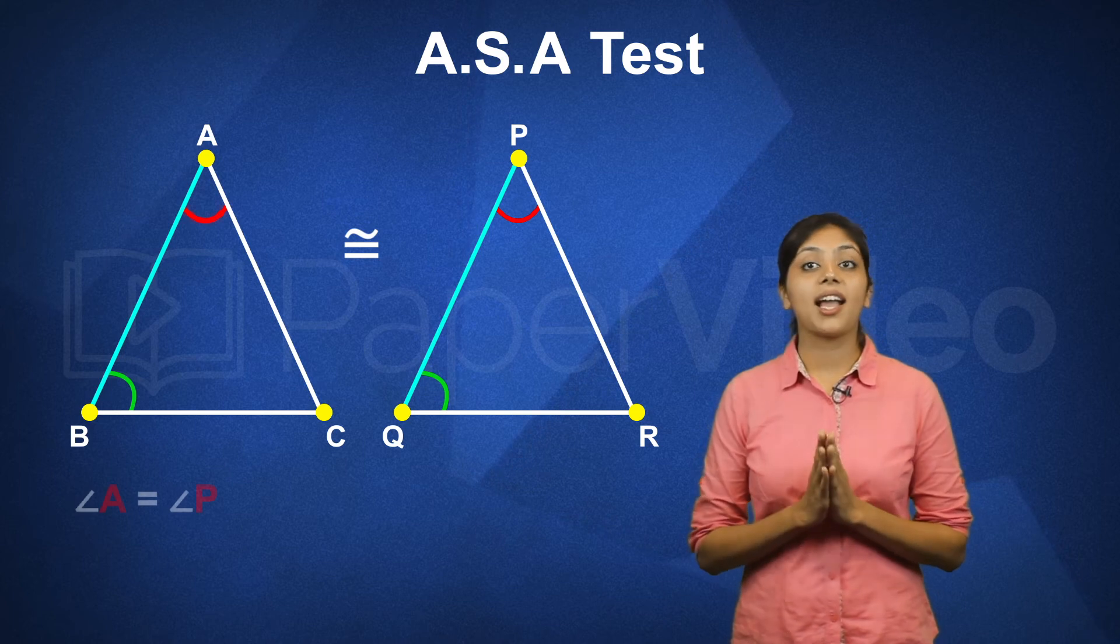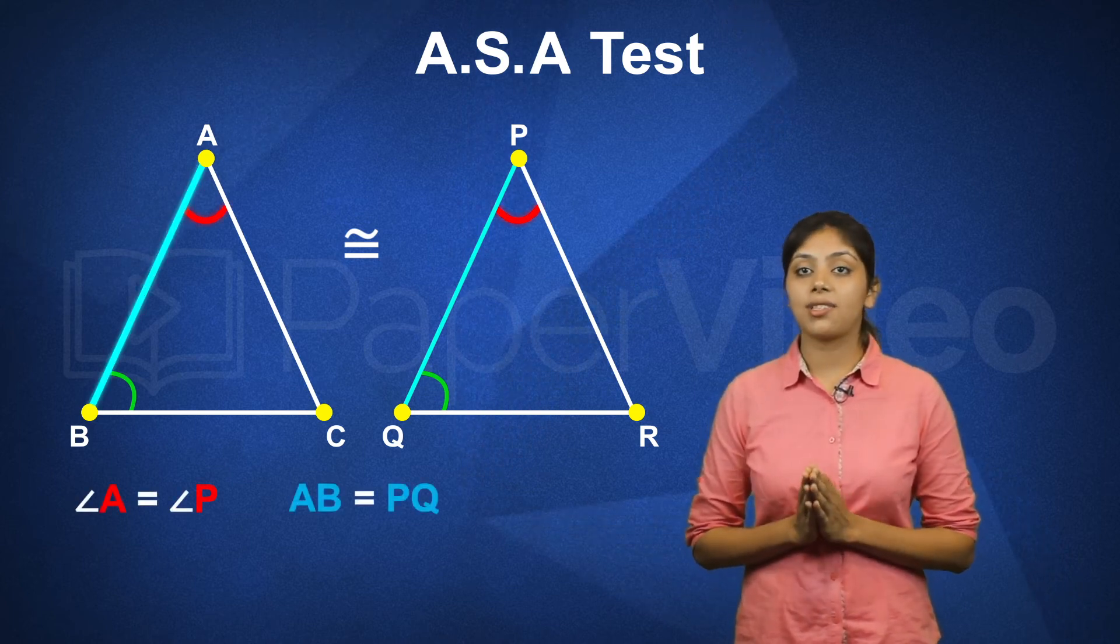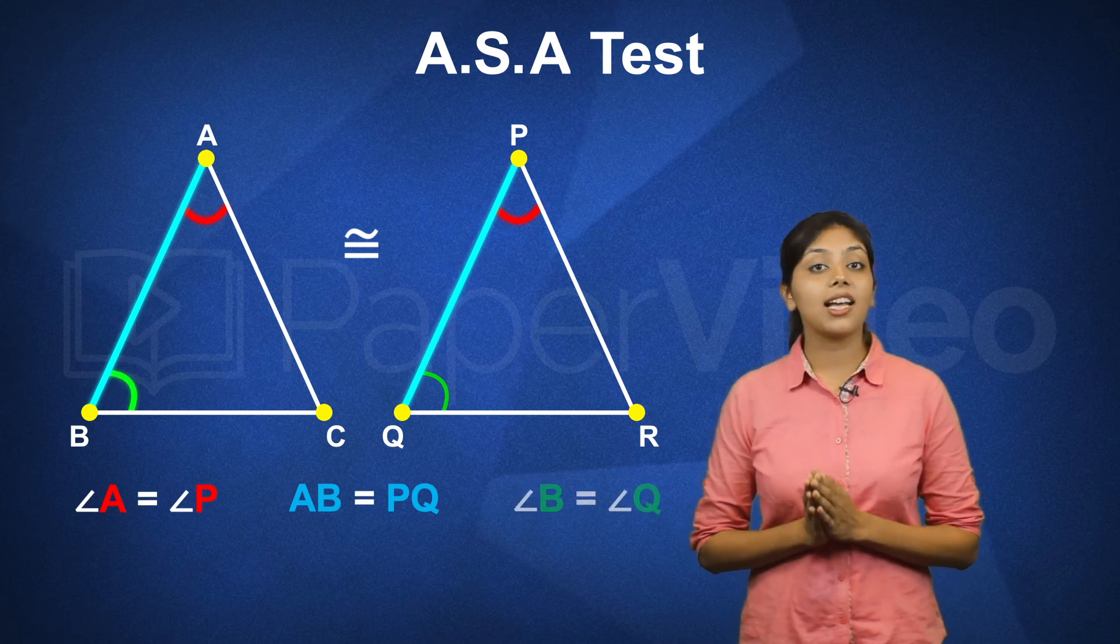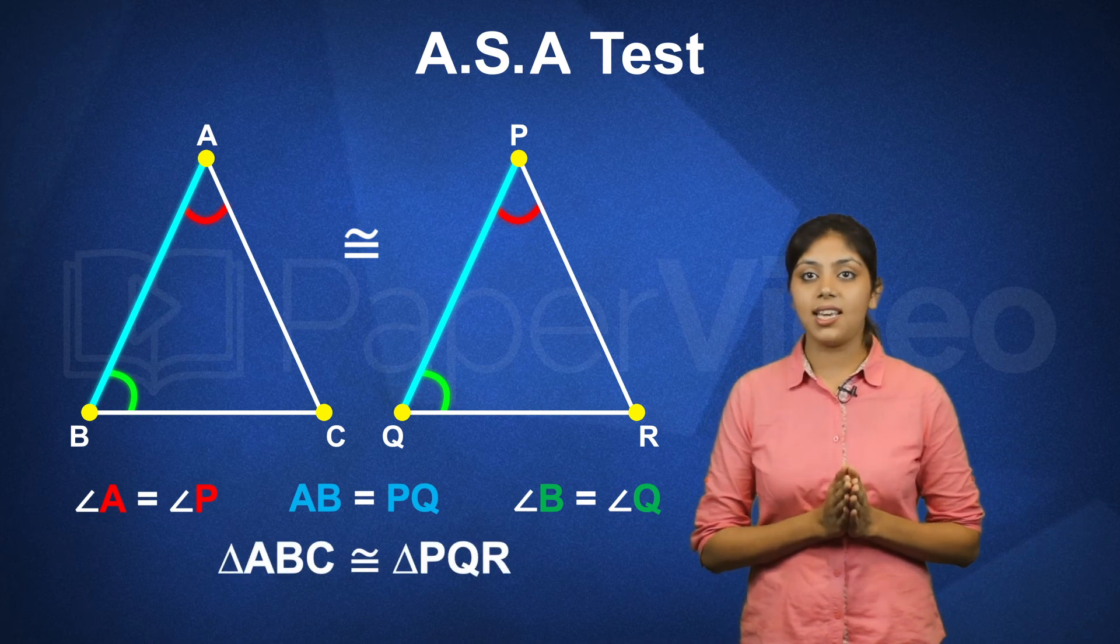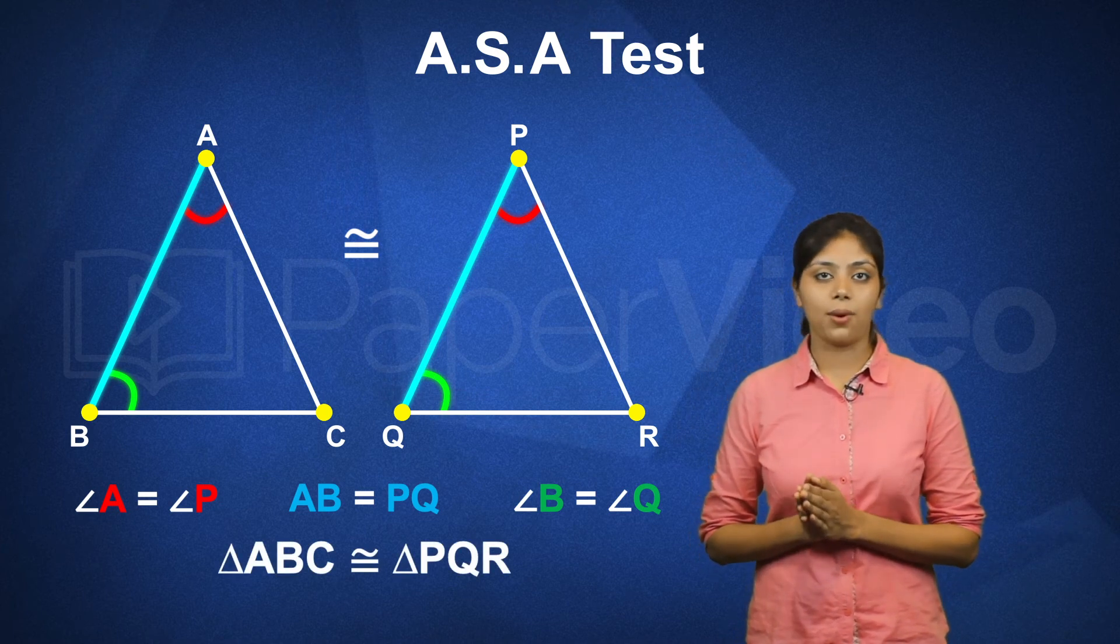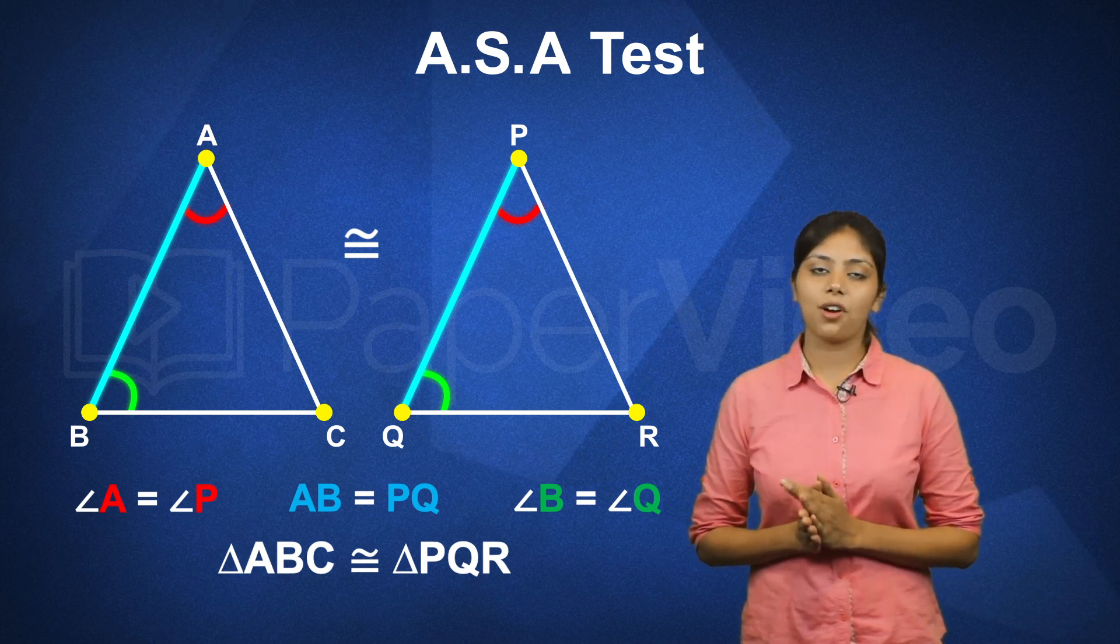This means that if angle A is equal to angle P, side AB is equal to side PQ and angle B is equal to angle Q, then we can say that triangle ABC is congruent to triangle PQR. This is known as Angle-Side-Angle Test of congruency.